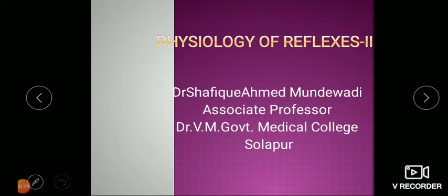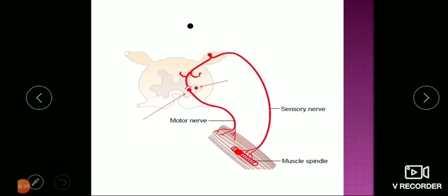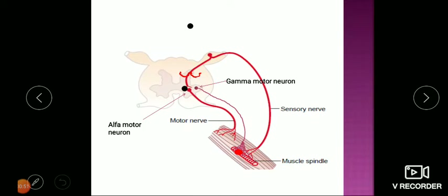To maintain body posture and other activities, some additional reflexes are required. This is our basic stretch reflex learned in detail in the first lecture. From the muscle spindle, after stretch, the impulse goes back to the spinal cord through the sensory nerve, activating the alpha motor neuron and leading to muscle contraction — this is the reflex action.